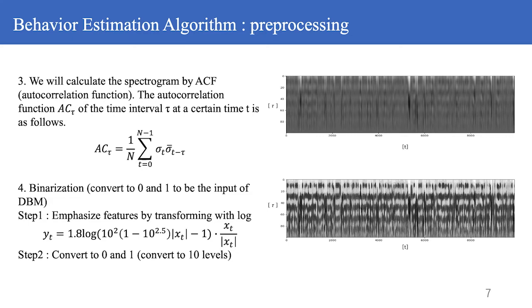In addition, since it is necessary to protect the information of the part with a small amplitude, the logarithmic transformation is performed to emphasize the features. The transformed data is then transformed into 10 steps using 10 nodes. These are then used as input to the Deep Boltzmann machine. The spectrogram looks like the figure on the right.